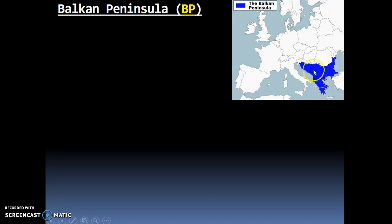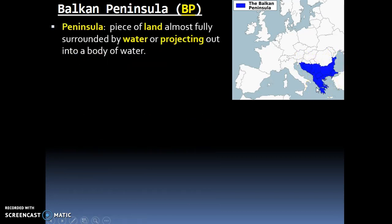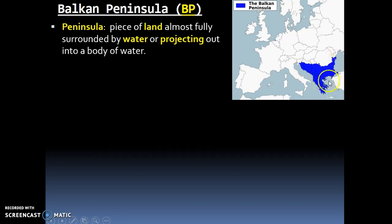A peninsula is a piece of land almost fully surrounded by water or projecting out into a body of water. We can see the Balkan Peninsula is surrounded by water on the western side, the southern side, and the eastern side — so it is considered a peninsula.